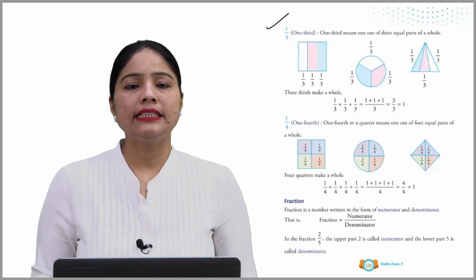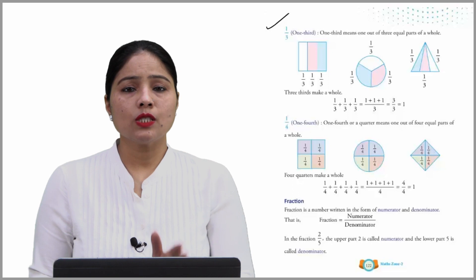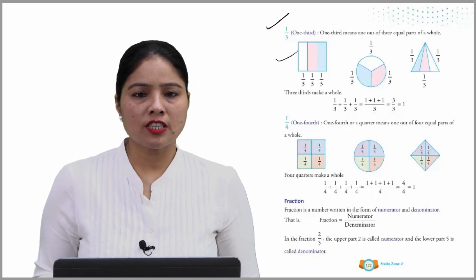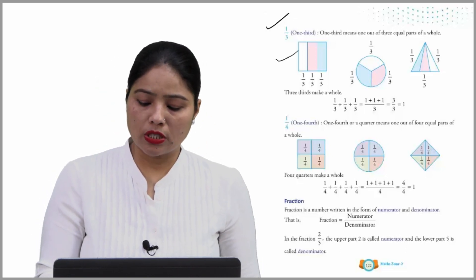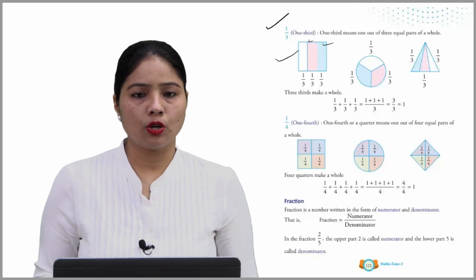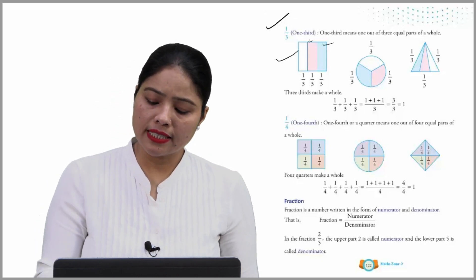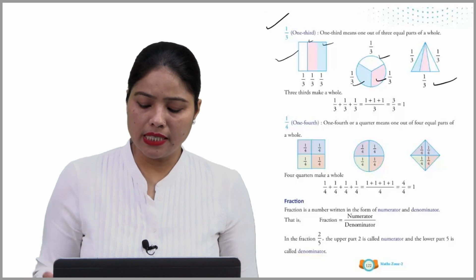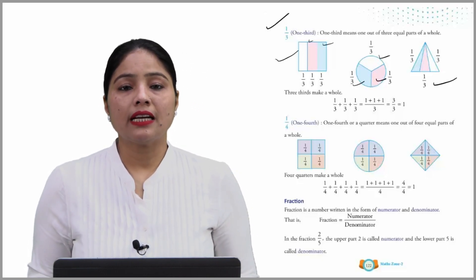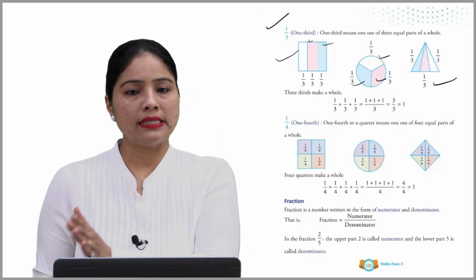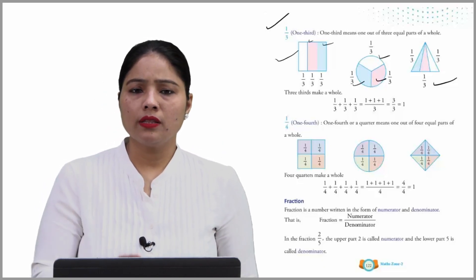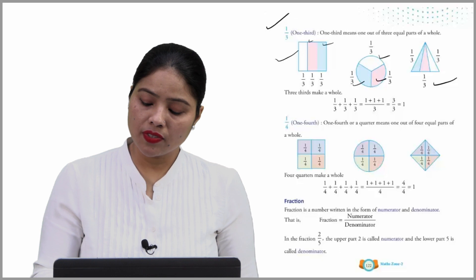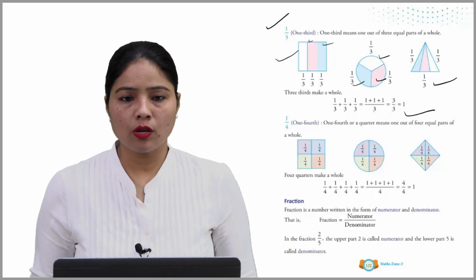One third means one out of three equal parts of a whole. ये complete pictures हैं, इसके three parts हमारे कर रखे हैं — this is one part, this is two part, this is three part, and these are equal. Similarly, ये circle है — ये one third part, this is one third, this is one third. So, three thirds make one whole. जब तीन parts समारे मिल जाते हैं, ये मिलके whole बनाते हैं. One third plus one third plus one third means one plus one plus one is equal to three, and three में से three गया — one.